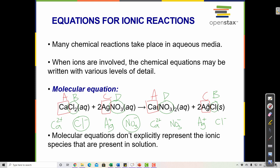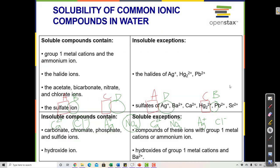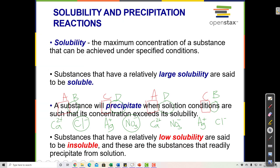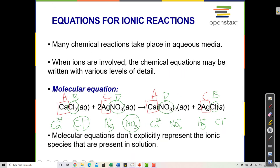Keeping track of subscripts and how many ions you have is essential for writing the ionic equation. In the balanced molecular equation: 1 calcium on the left and 1 on the right, 2 chlorides on each side, 2 silvers on each side, 2 nitrates on each side — it's balanced. Using the solubility table: nitrate compounds are soluble; halide compounds are soluble except with silver — so silver chloride is insoluble, marked with (s).